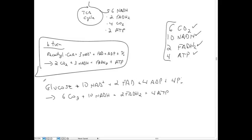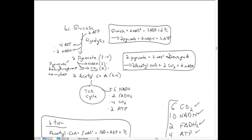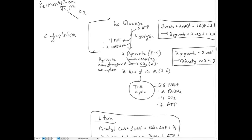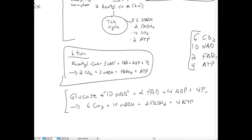That's essentially the complete oxidation of glucose through glycolysis and the TCA cycle. Two important locations to remember: glycolysis takes place in the cytoplasm — if there is oxygen it goes through cellular respiration; if there's no oxygen, anaerobic conditions, we do fermentation. Pyruvate then moves into the mitochondrial matrix, where the TCA prep reaction and TCA cycle take place.